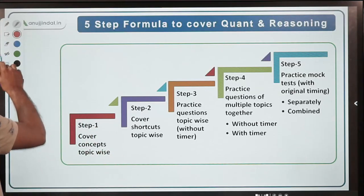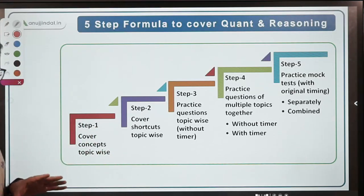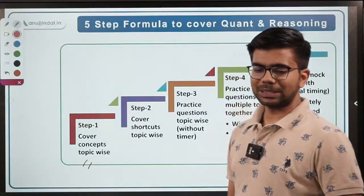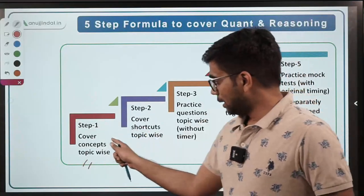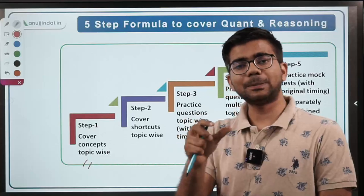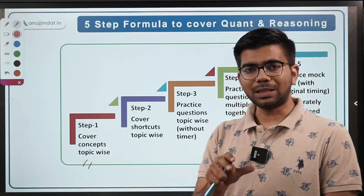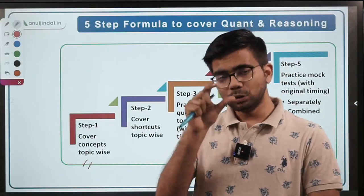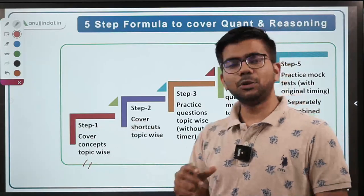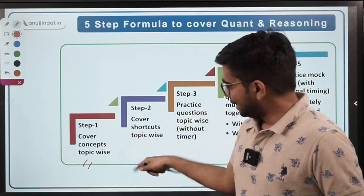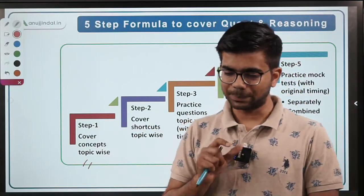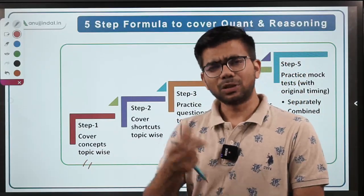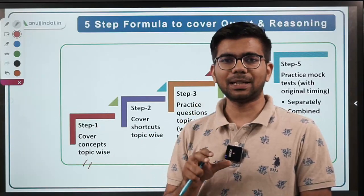Step one is covering the concepts topic-wise. First of all, you need to cover the concepts topic-wise — those concepts which we studied in school from class 6 to class 10. You have to cover the concepts of all the topics of content reasoning. In reasoning, there are not too many concepts, but in quant there are a lot of concepts.